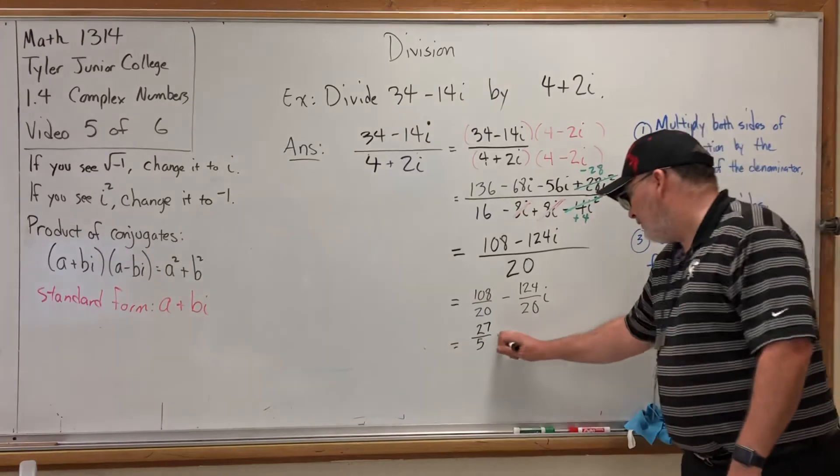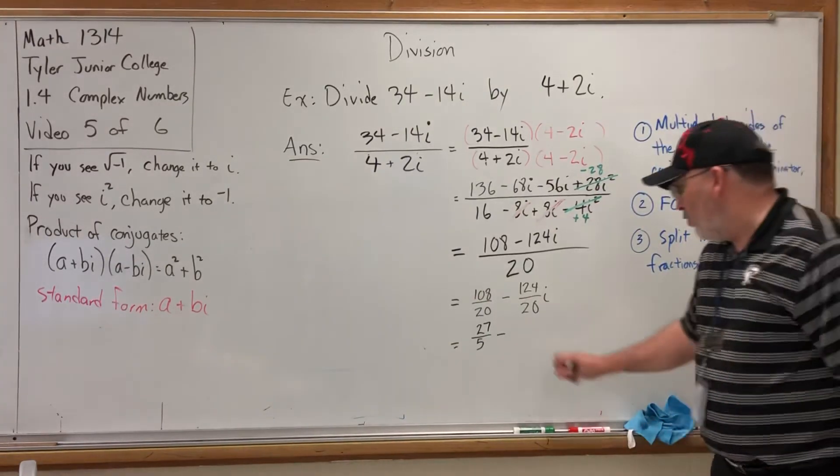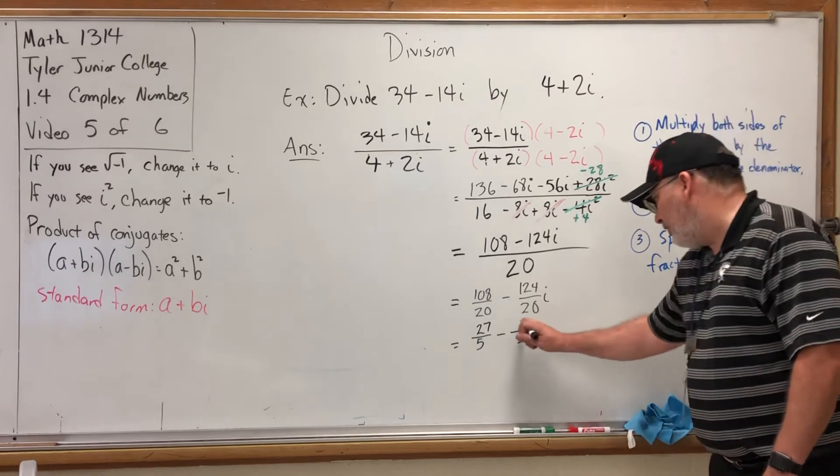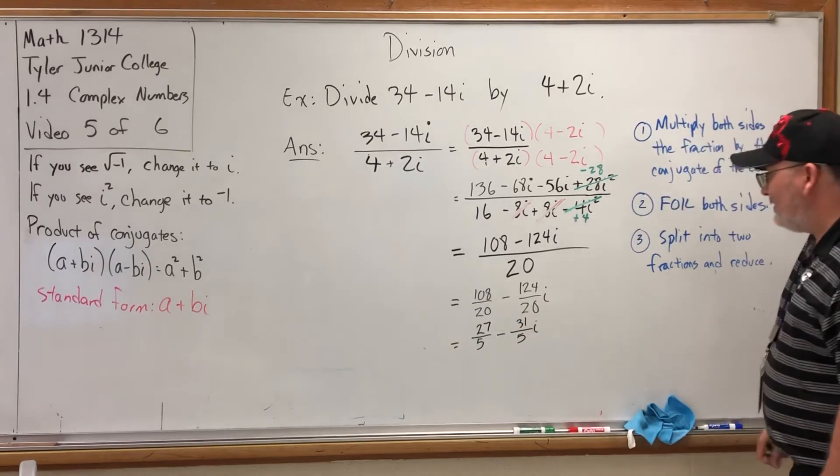And both of those fractions can reduce. The first one can reduce by 4—that will leave a 5 on the bottom and a 27 on the top. The second fraction will also reduce by 4, leaving a 5 on the bottom and looks like 31 on the top with an i at the end.